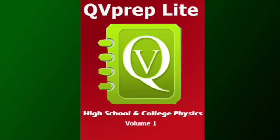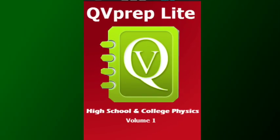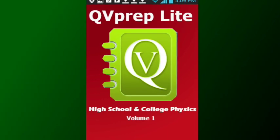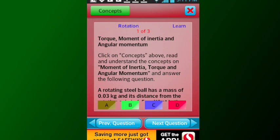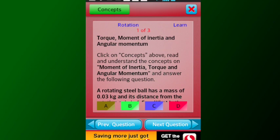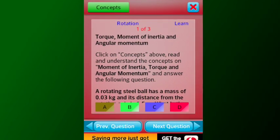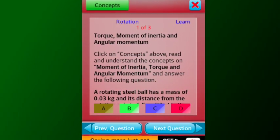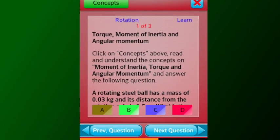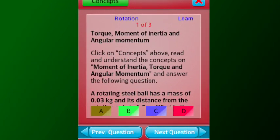Welcome to the promotional video of QVPrep Lite, High School and College Physics Volume 1. The app is ideal for high school students grades 11 and 12, college students in their first year of physics, and SAT subject test physics preparation.